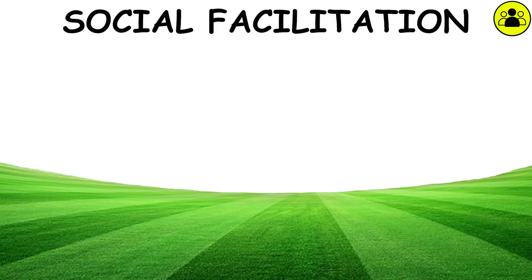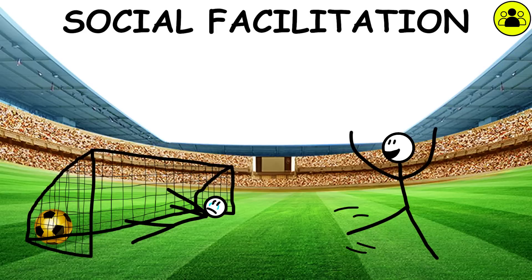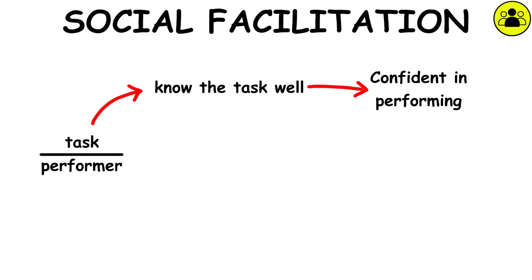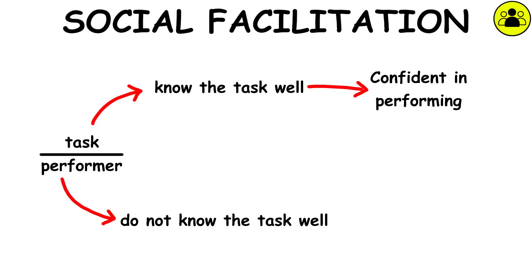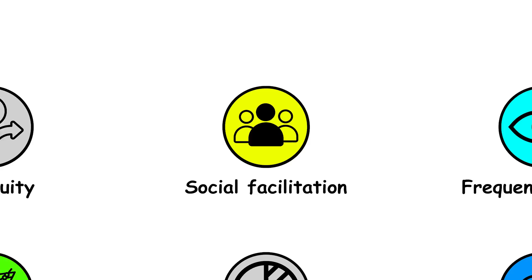Social facilitation. Social facilitation occurs when someone performs a task better in the presence of others than when alone. If someone knows the task well, they are confident in performing it in front of an audience. If they do not know the task well, it may reduce their confidence in carrying it out.